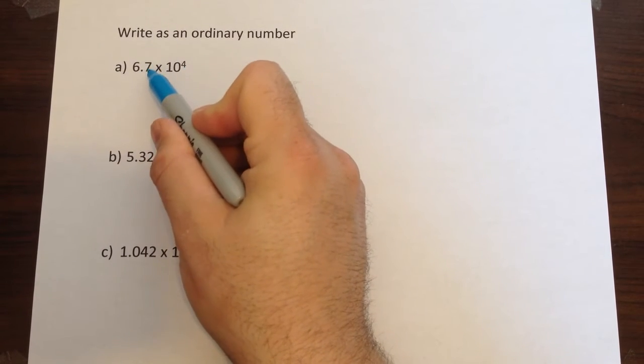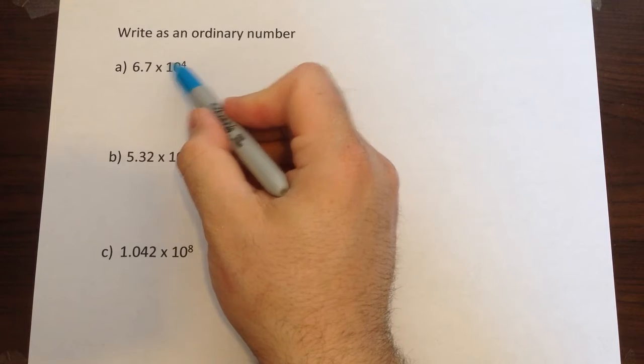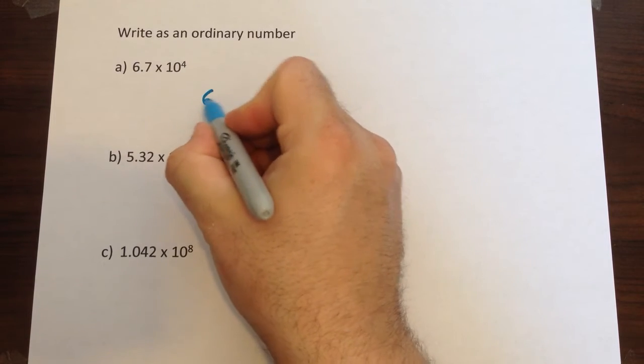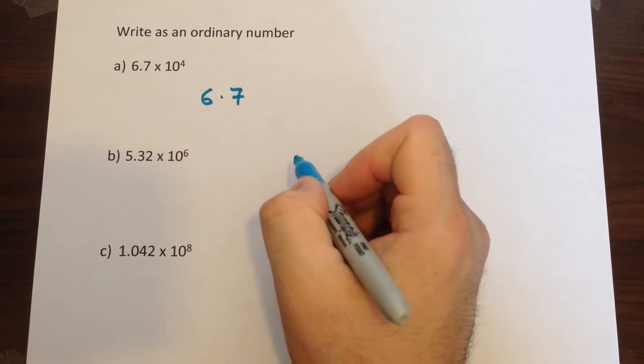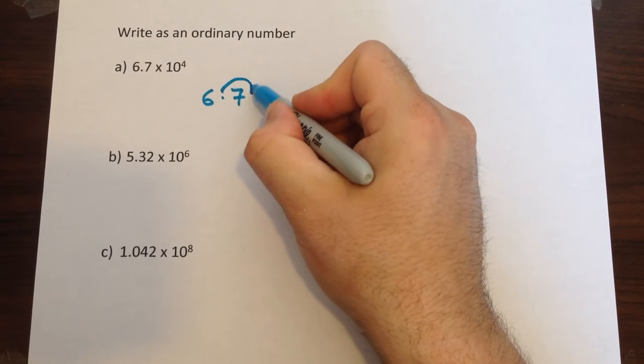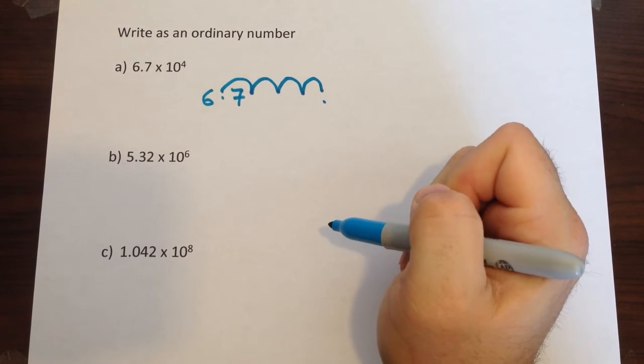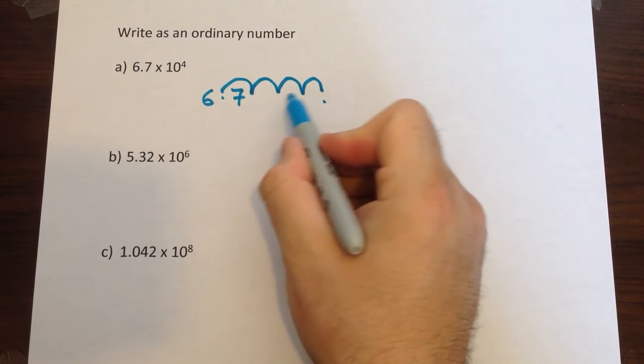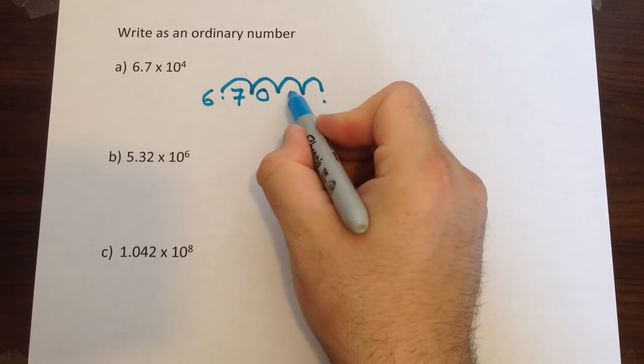The power tells you how far we're going to have to move the decimal point. In this case we're going to have to move it four places. So if we start with 6.7 and we move the point 1, 2, 3, 4 places to there, we've then got these gaps here that we need to fill in. We fill those in with zeros.